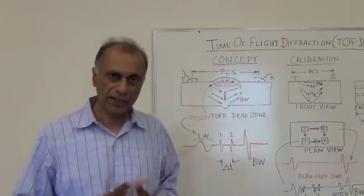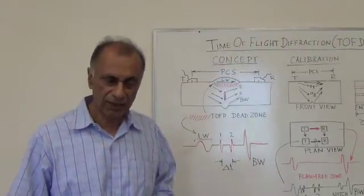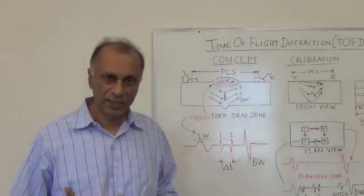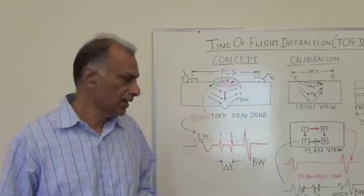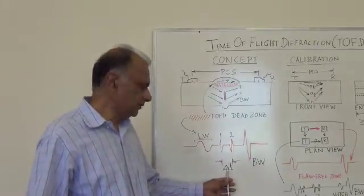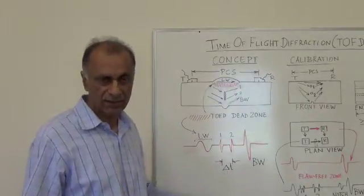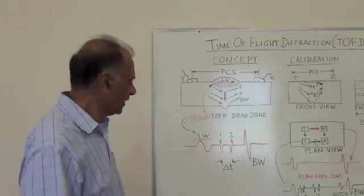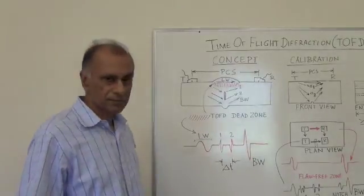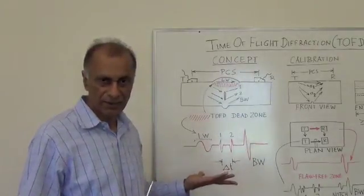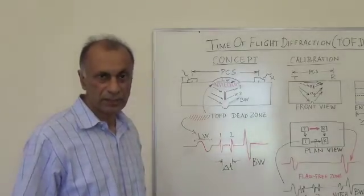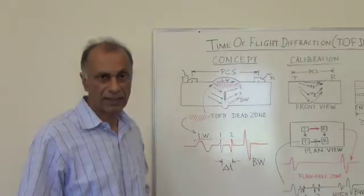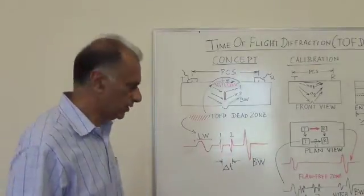Now how do we calculate the size of the flaw? The size of the flaw is calculated using basic trigonometric formulas and using delta T, which is converted to the distance using the velocity of the sound and the PCS. The trigonometric formulas are used to compute the depth of the flaw as well as the size of the flaw.